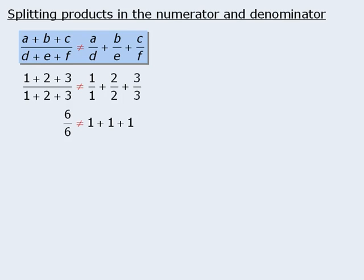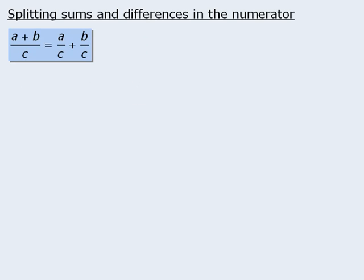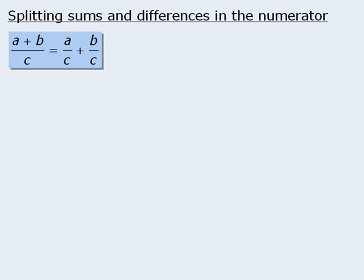Now there is, however, a property that does allow us to split a certain kind of sum. It looks like this. Notice that we are splitting the numerator into two parts, but the denominator stays the same. So for example, we can take this fraction and rewrite it as the sum of these two fractions.